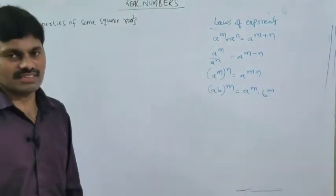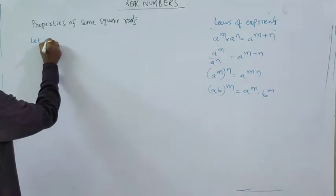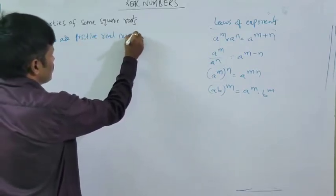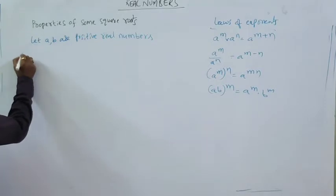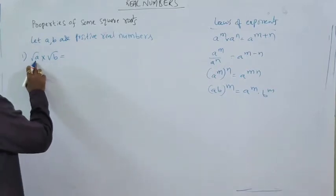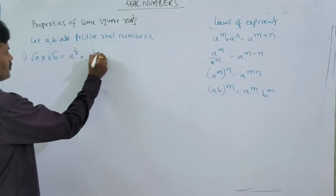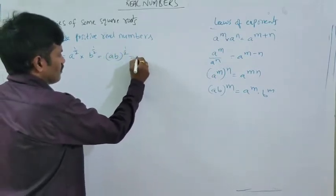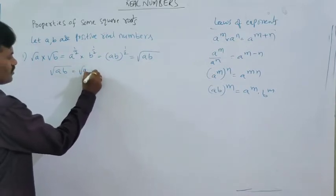Let A and B be positive real numbers — positive real numbers — because square root is defined for positive numbers only in the real number system. The first property: square root of A into square root of B. Square root of A can be written in exponential form as A power 1 by 2, and square root of B as B power 1 by 2. Since they have the same power, together we can write AB whole to the power of 1 by 2, which is equal to square root of AB. So square root of A into square root of B can be written as square root of AB.